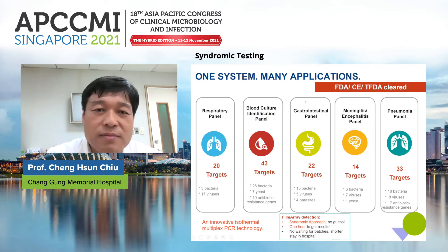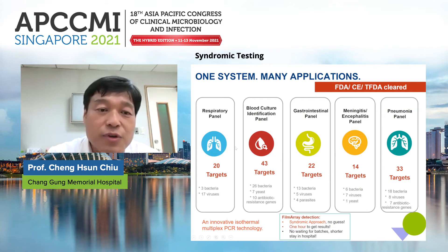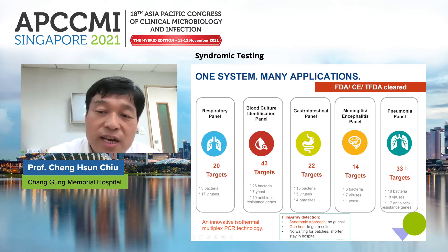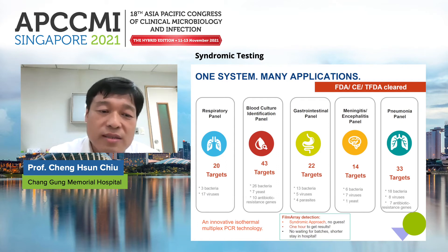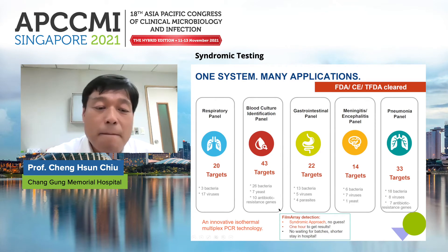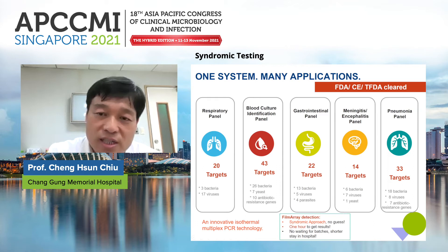The FilmArray panels cover different kinds of clinical syndromes. Today I will specifically talk about the FilmArray Respiratory Panel, the so-called RP panel, which targets 20 respiratory pathogen targets at a time. They have also recently developed the Pneumonia Panel, or PP panel, which targets 33 targets at a time. The FilmArray panel uses an innovative isothermal multiplex PCR technology that can target multiple organisms for a specific syndrome simultaneously.